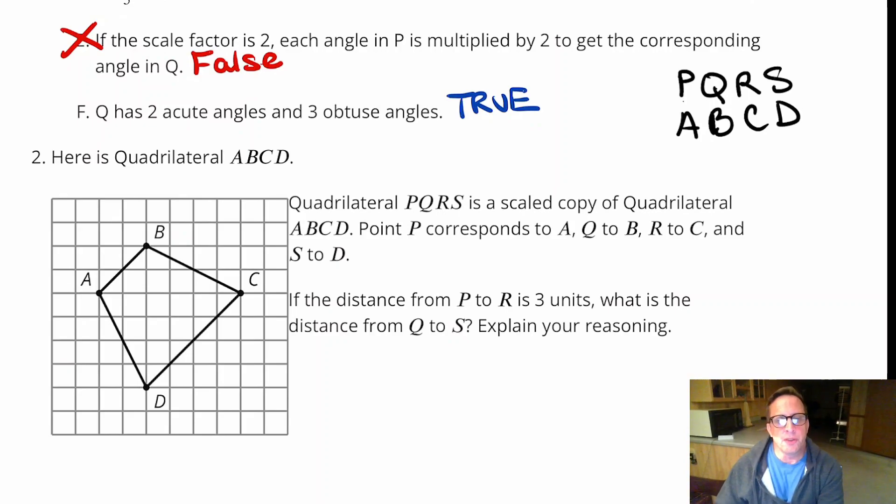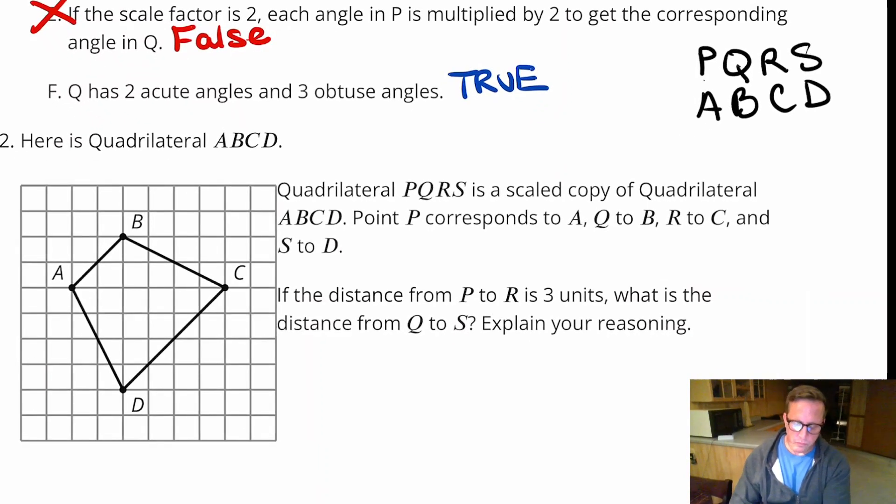So, it says right here, if the distance from P to R is three units, what is the distance from Q to S? All right, so P to R. Now, P to R, that basically is saying from A to C. From A to C.